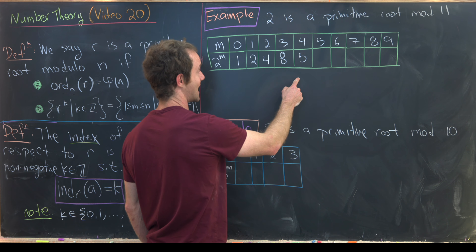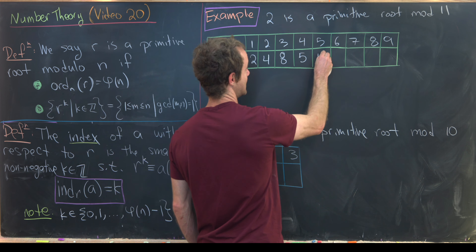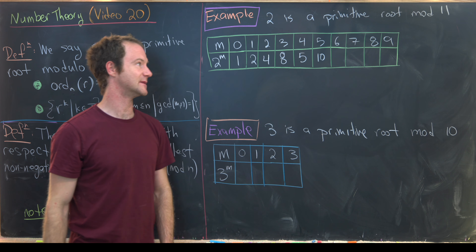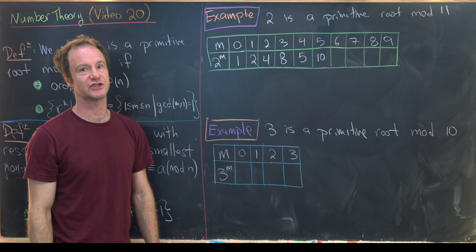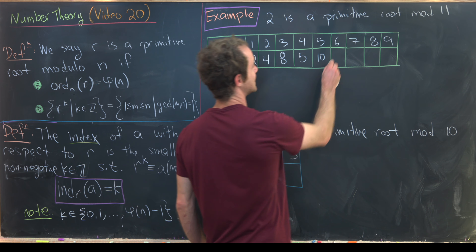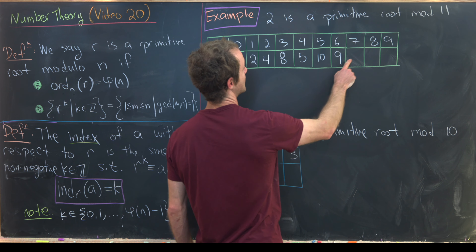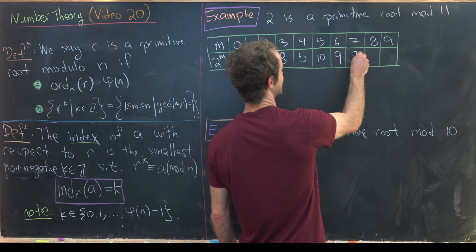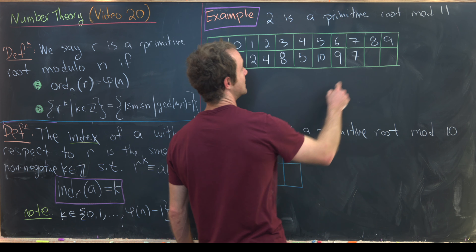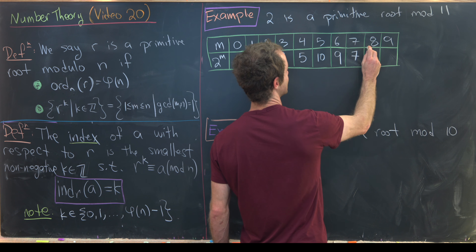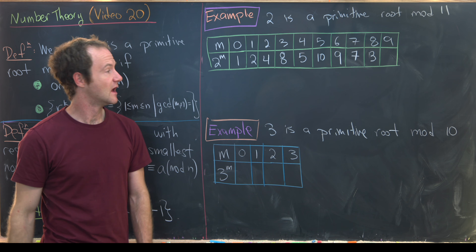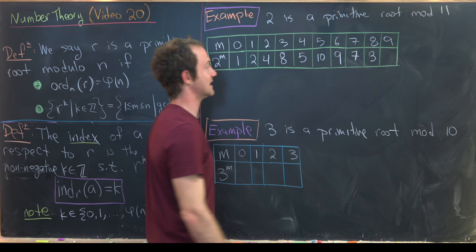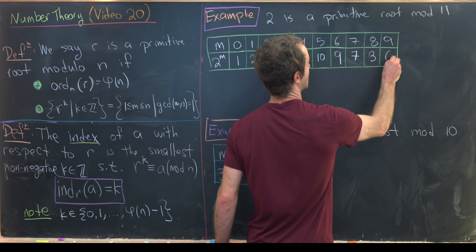Continuing: 2^5 = 10, 2^6 = 20, which is 9 mod 11, 2^7 = 18, which is 7 mod 11, 2^8 gives 14, which is 3 mod 11, and 2^9 gives 6. So we've generated all values.